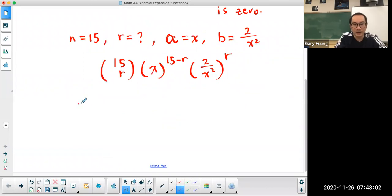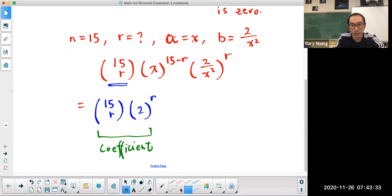Now we're going to isolate the variable and the coefficient separately. So 15 choose r is part of the coefficient. The 2 here is also part of the coefficient. So we're going to combine that together. So the coefficient is going to be 15 choose r and 2 to the power of r. That's going to be the coefficient of the term that I'm looking for. What about the variable? The variable is going to be x to the power of 15 minus r. And here, be careful, the x is in the denominator, which means this is x to the power of negative 2, raised to the power of r. This is the part of the variable.